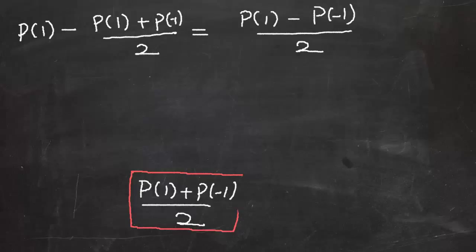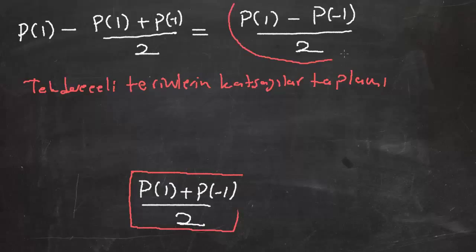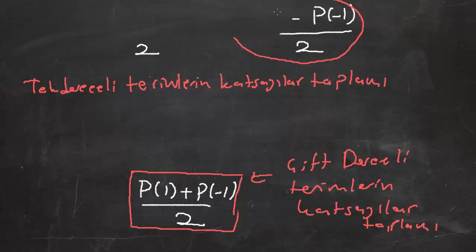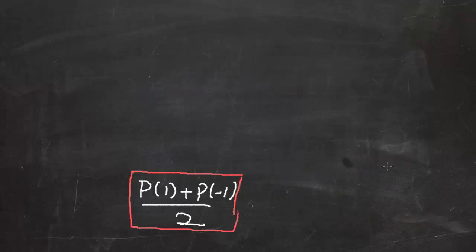Yani bu durumda eğer bir kuraldan bahsedecek olursak, tek dereceli terimlerin katsayılar toplamı [P(1) - P(-1)]/2 oluyor. Burası ise çift dereceli terimlerin katsayılar toplamı oluyor. Şimdi bu ifadeleri aklımızda tutalım ve bunları kullanarak bir iki soru çözelim.